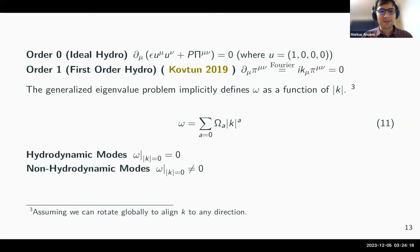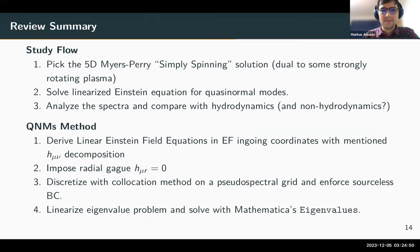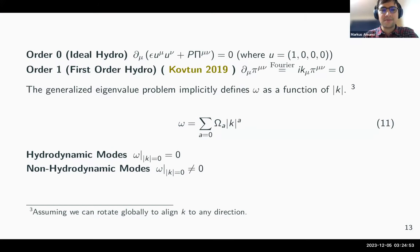Expanding omega in terms of k gives the hydrodynamic expansion. There are two particular modes we look at: hydrodynamic modes, where if k goes to zero omega also approaches zero; and conversely non-hydrodynamic modes, or so-called gap modes, where that doesn't happen. There was a nice paper by Cartwright back in 2019 about the stability of relativistic hydrodynamics.